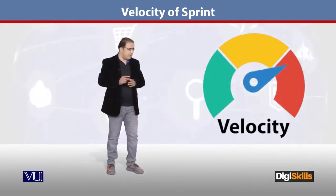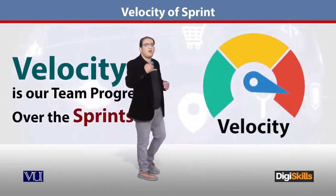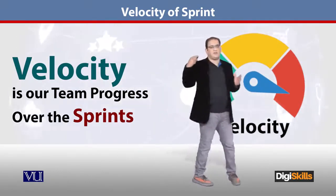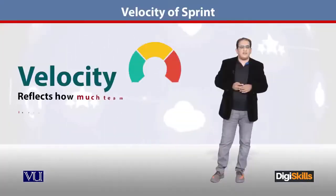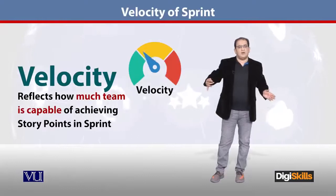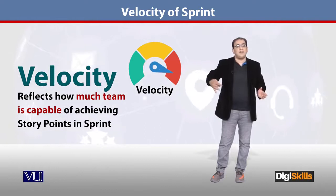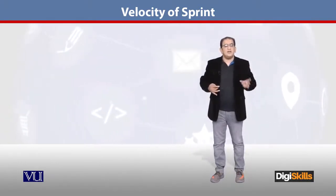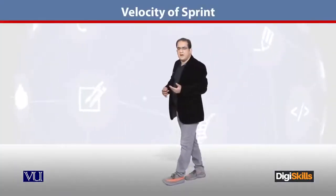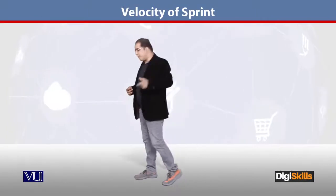Velocity tells us what progress is happening over the sprints. This is an interesting terminology. Velocity tells us how much capability there is to deliver user story points — not just story points — because story points are a yardstick for how much complexity can we deliver. Velocity basically tells us how much speed your team has.